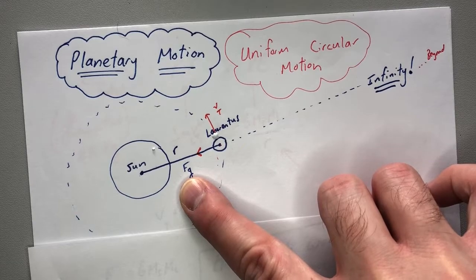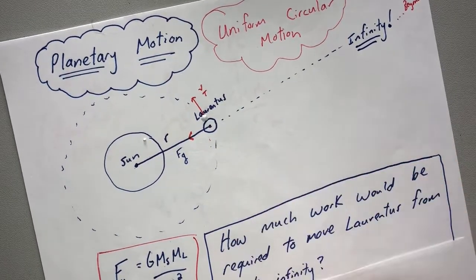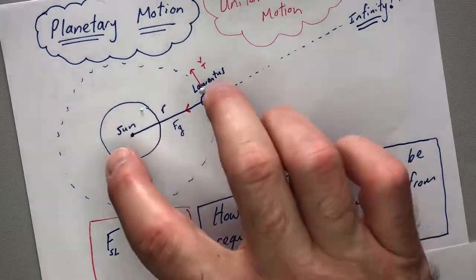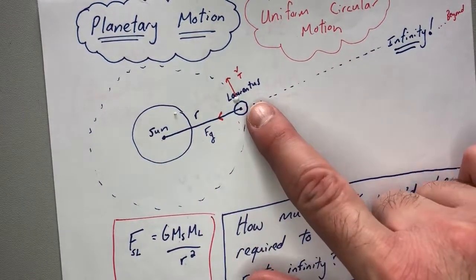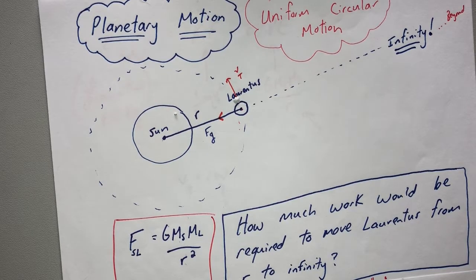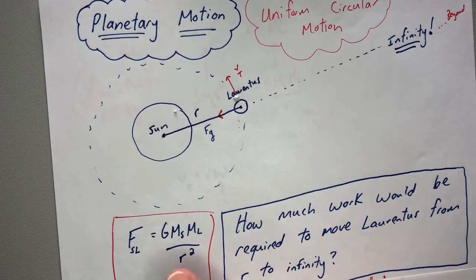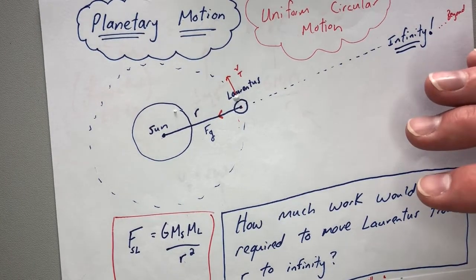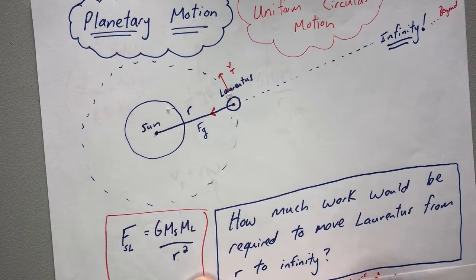We know what the force due to gravity equation is for stuff that's in orbit — it's this equation right here: the force of gravity from the sun to Laurentiis. So the question is, how much work would be required to move Laurentiis from R all the way out to infinity? It's going to take some energy because it doesn't want to leave. If you want to figure out the work, you integrate force with respect to position. We're not talking about X anymore — we're using R because we're in a radial coordinate system. It's the same concept.